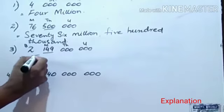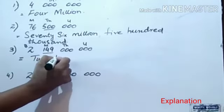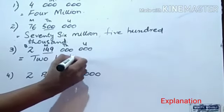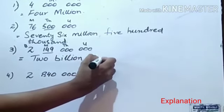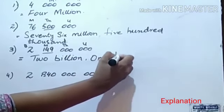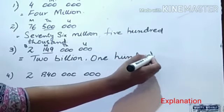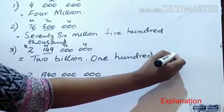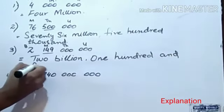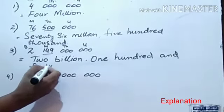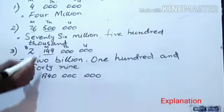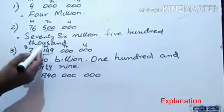Now write 2 billion 149. What? 49? 149 what? Million.